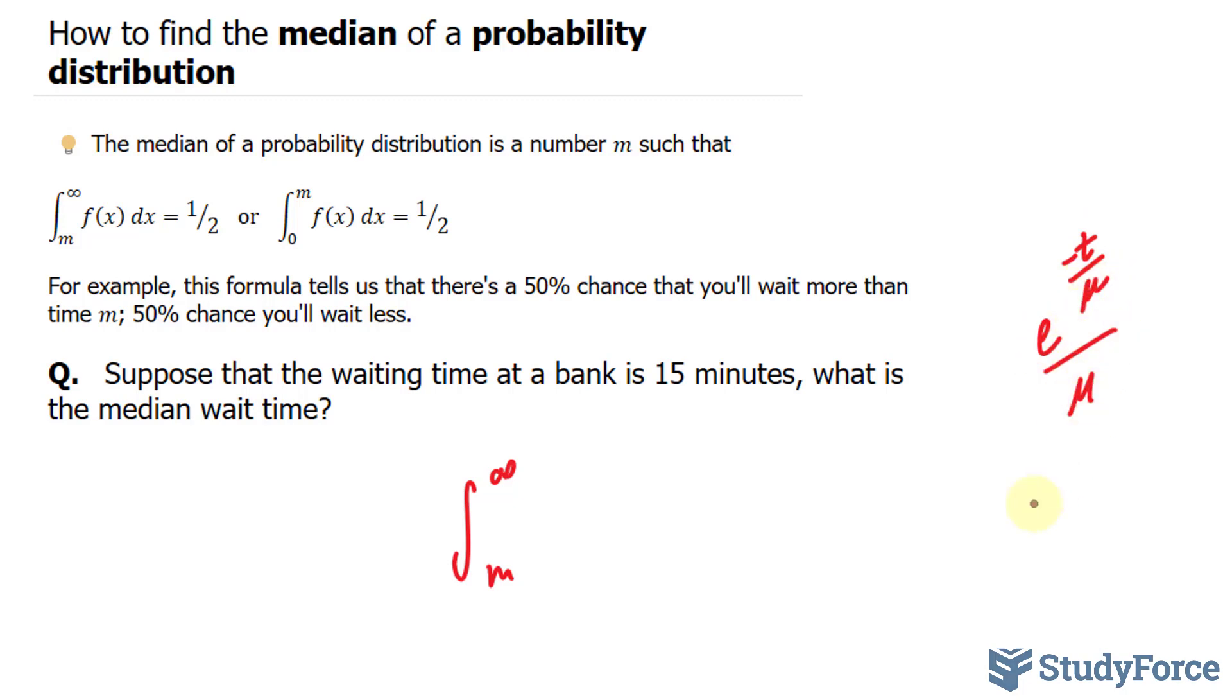Our average wait time here is 15, so I'll replace mu with 15 in both places. So I have e to the power of negative t over 15, divided by 15, with respect to t. And according to this formula, this equals one-half.